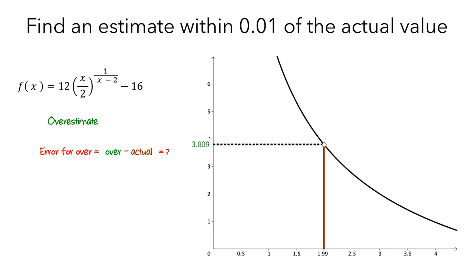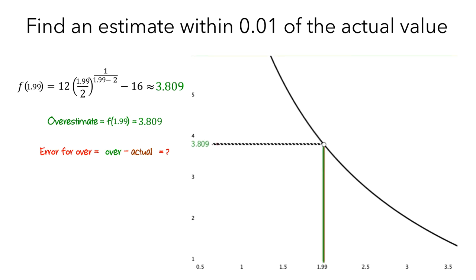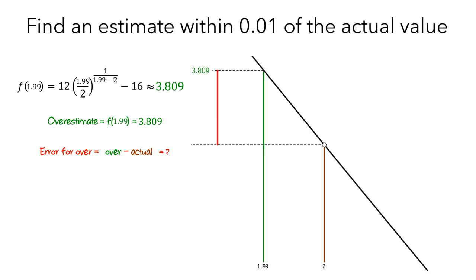Let's move x closer to 2. Now the value of x is 1.99. The overestimate is now f of 1.99, and when we evaluate f at 1.99, we get 3.809. Since the error is not even really visible on the graph, we might think that this overestimate might now be within 0.01 of the actual value. Let's zoom in on the graph to better see the error. Since we don't know the actual value of the height of the hole, even though our approximation is better, we don't know for sure if the error is less than 0.01.